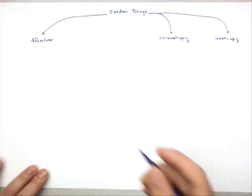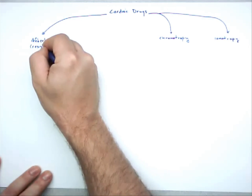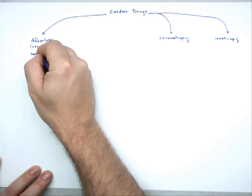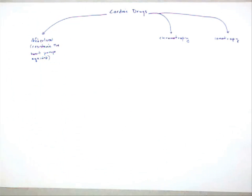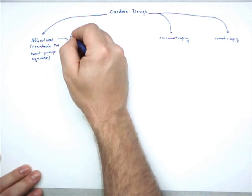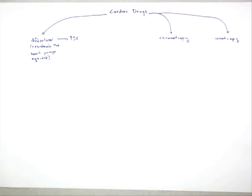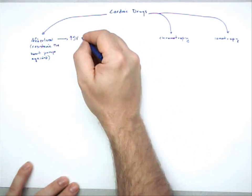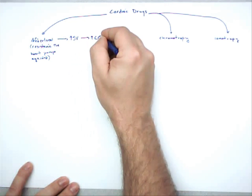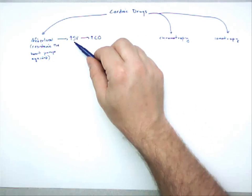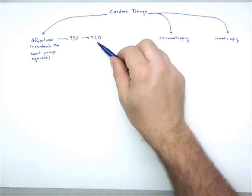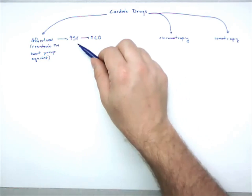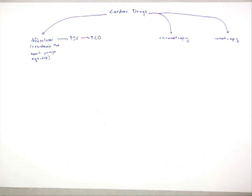Afterload is the resistance the heart pumps against — how much is the blood pushing back that the heart is trying to push out. If we can decrease afterload, the first thing it's going to do is increase stroke volume (SV). Stroke volume is how many milliliters of blood can be pumped per cycle. If you can increase that, then you increase cardiac output (CO), which is heart rate times stroke volume.